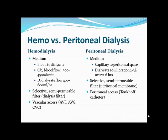Both modalities require a selective semipermeable membrane that allows differential removal of solutes based on molecular weight, charge, protein binding, solubility, and other characteristics. They also require a way to remove waste products and fluid. In hemodialysis, access is preferably an AV fistula or AV graft, sometimes starting with a central catheter. In peritoneal dialysis, a peritoneal catheter is used — most commonly the Tenckhoff catheter in the US.